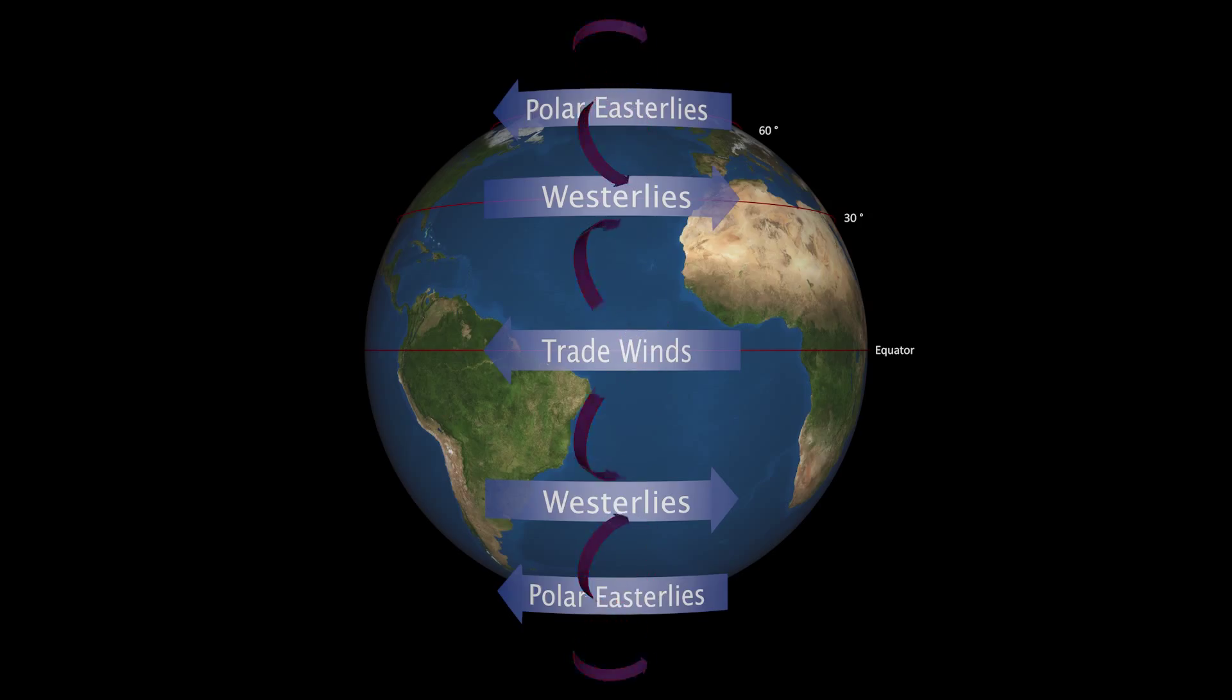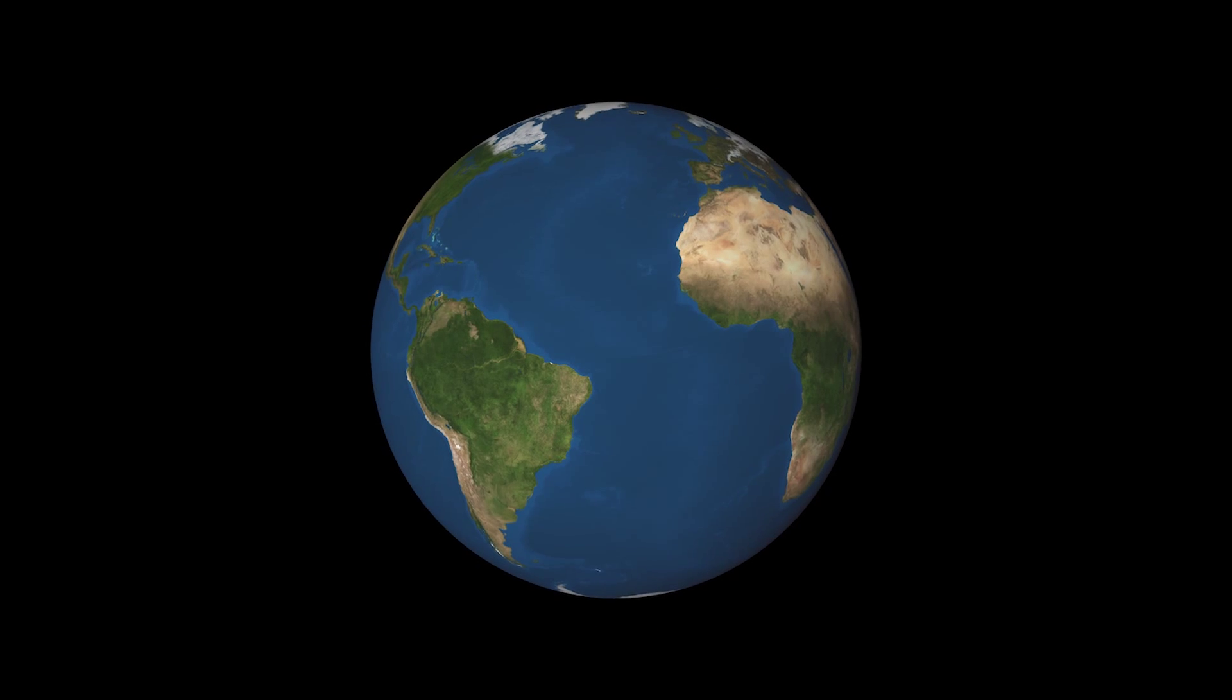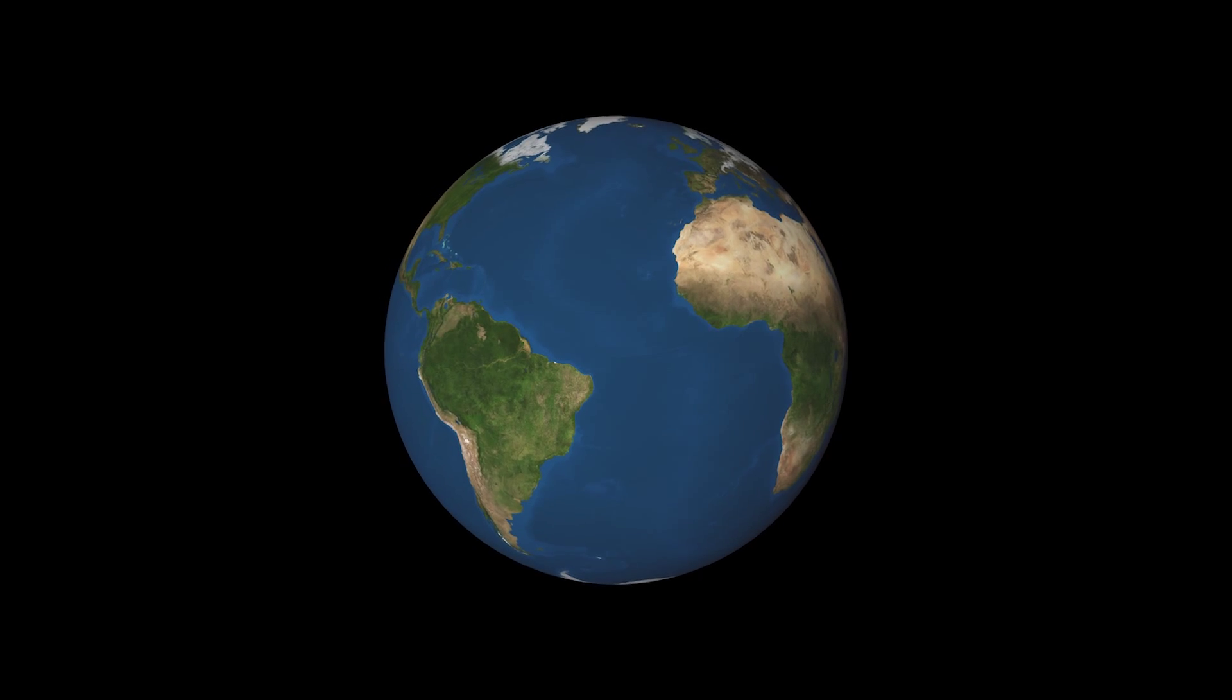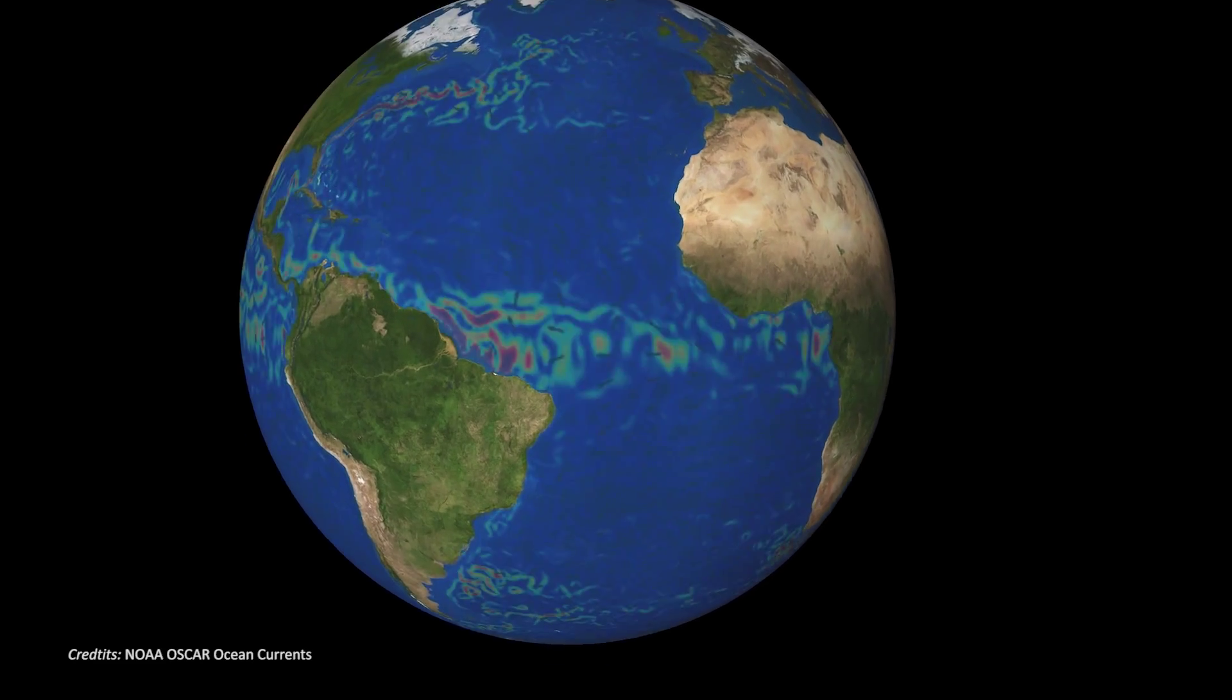These atmospheric circulation cells drive large-scale wind-driven ocean gyres. As shown in the animation of the global ocean, these gyres typically form surface circulation systems.